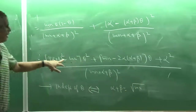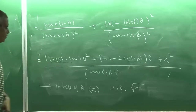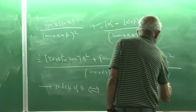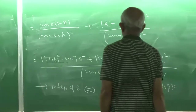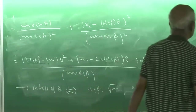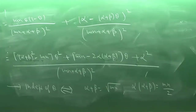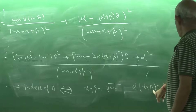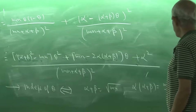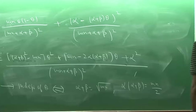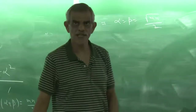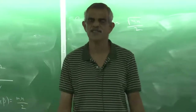Setting the theta^2 coefficient to zero: (alpha+beta)^2 = mn, so alpha+beta = sqrt(mn) (taking the positive root since alpha, beta > 0). Setting the theta coefficient to zero: mn = 2*alpha*(alpha+beta) = 2*alpha*sqrt(mn), giving alpha = sqrt(mn)/2. Then beta = sqrt(mn) - alpha = sqrt(mn)/2. So alpha = beta = sqrt(mn)/2, which is an admissible choice since both are positive.